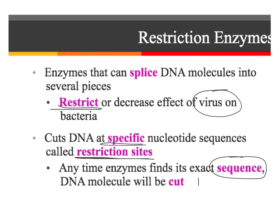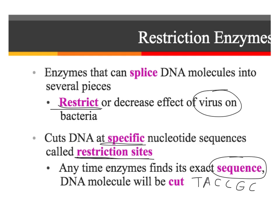For example, if an enzyme always cuts at T-A-C-C-G-C, it's always going to look for that sequence, and wherever it finds it, it makes the same cut. There were examples on the worksheet: HIND-3, BAM-H1, and ECO-R1. You probably answered the question about how they're named — they're named based on what type of bacteria they were found in and what number restriction enzyme it is. For example, ECO-R1 was the first one found in that type of E. coli bacteria.